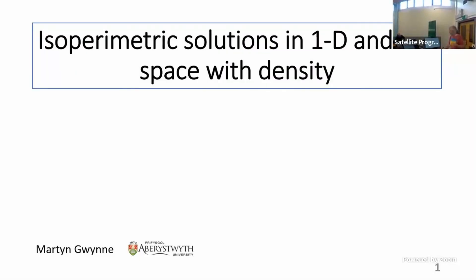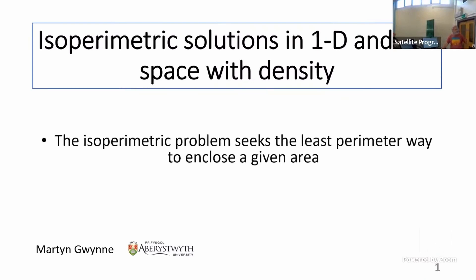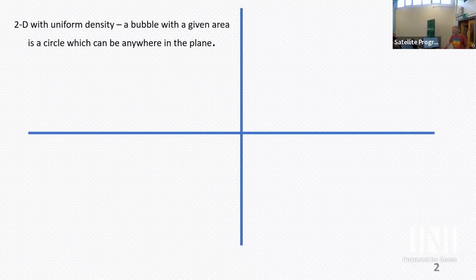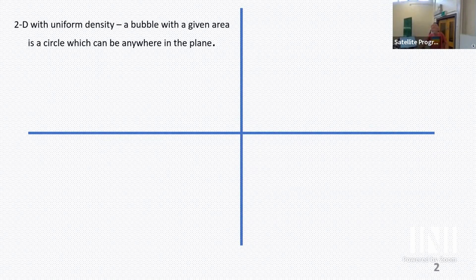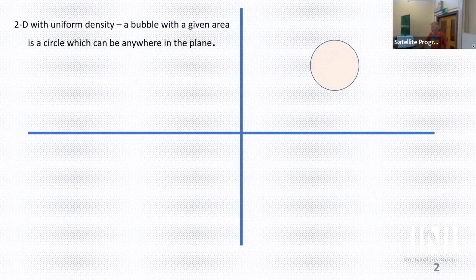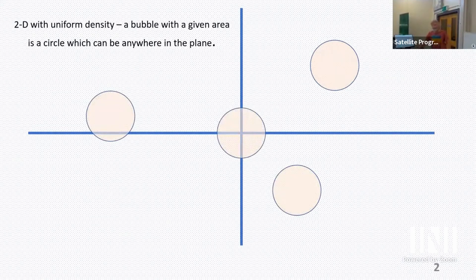Good afternoon. I'm sure you've been coping with hundreds and thousands of bubbles, but this afternoon I can't cope with that, so one bubble but in odd spaces — not your ordinary space. The basic isometric problem: seeking the least perimeter to enclose a given area. In 2D, in ordinary Euclidean space, for a given area the bubble would be circular and it could be anywhere on the plane — they'd be equivalent.